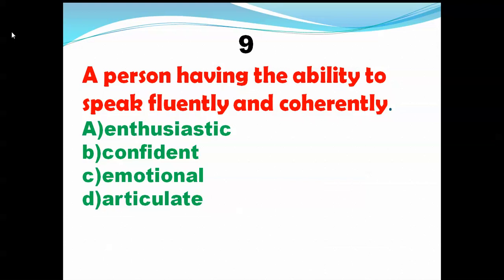Confident means sure — I'm sure of what I'm doing, I know what I'm going to achieve. I'm confident of getting good marks in the examination. Emotional means something related to the mind, feelings, and psychology — someone affected by feelings. So the right choice is articulate — a person having the ability to speak fluently and coherently. The other words are also very important if you know how to use them.